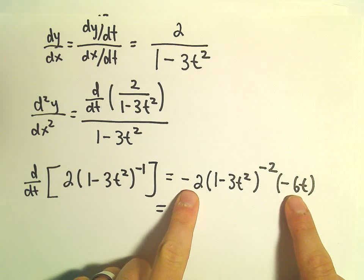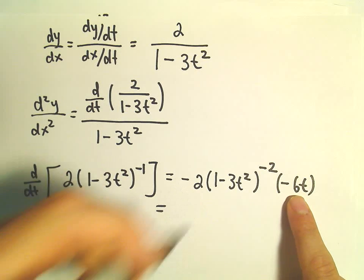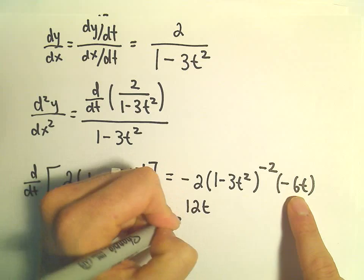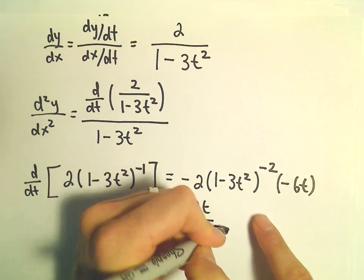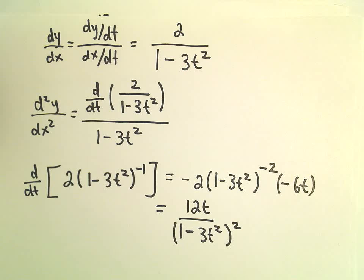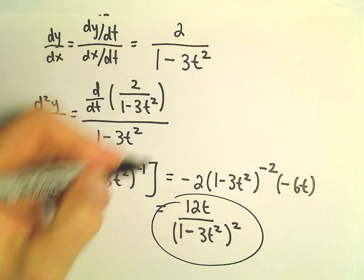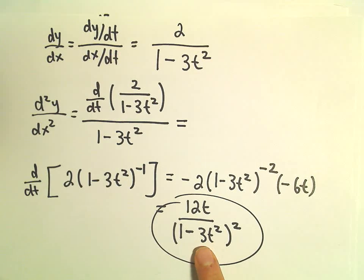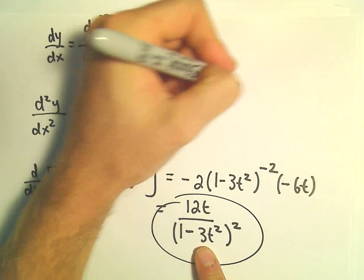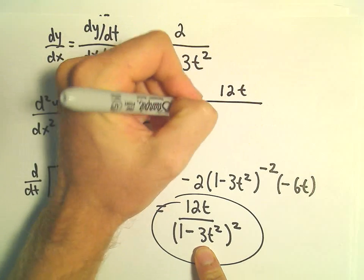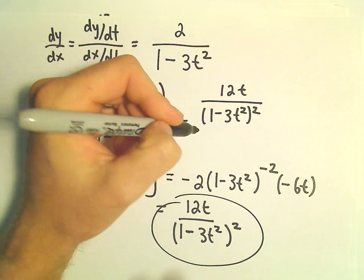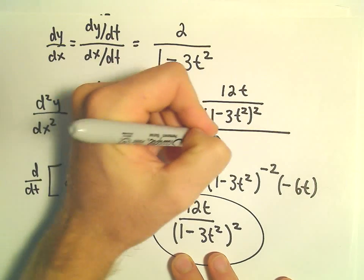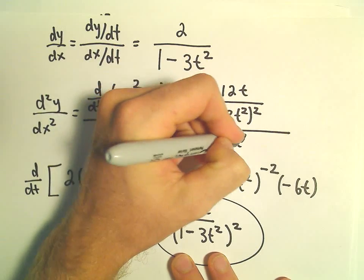Alright, so when we simplify, negative 2 and negative 6t will give us positive 12t. And then we can put the 1 minus 3t squared squared back in the denominator. So this is just our numerator after taking the derivative. So 12t over 1 minus 3t squared squared. Well, all of that is being divided by 1 minus 3t squared.